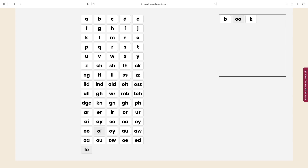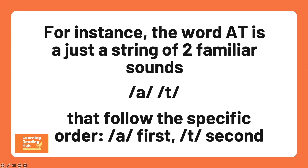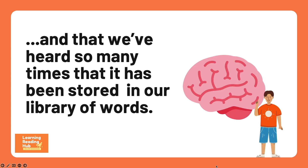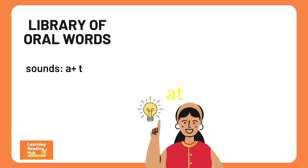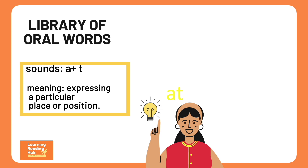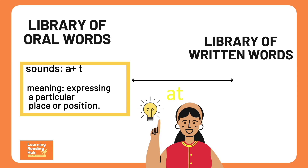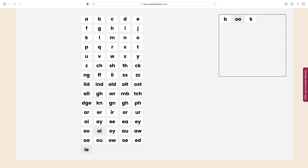If we go a level deeper, we also do that with words. For instance, the word AT is just a string of two familiar sounds that follow the order A in the first place and T in the second place, and one we've heard so many times that it has been stored in our library of oral words. Once added to our library of oral words, we are able to recognize the word AT and its meaning as soon as we hear it. When we are learning to read, we add another leg to the equation — the written representation of those oral words. We do this naturally when learning to read through phonics; the sounds in oral words end up being mapped to the letters in these words and stored in our long-term memory, word by word. This process has been given the name orthographic mapping.